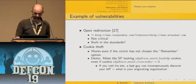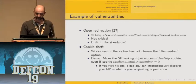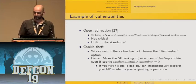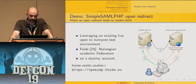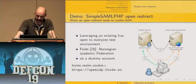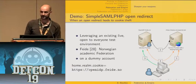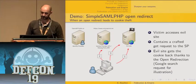A bad guy can inconspicuously discover your identity provider — your originating organization — which is at least a privacy issue. To demonstrate this, I've been leveraging an existing live open test environment provided by the Norwegian Academic Federation called OpenIDP, using a dummy account. The cookie I'm going to steal is the HTTPS OpenIDP.fider.no session cookie. The demo shows a complete four-step SAML authentication, followed by how a bad guy can steal this cookie in a three-step process: the victim accesses the bad guy's site, which crafts a GET request to the service provider leveraging the open redirection vulnerability to send back the cookie to a controlled website.